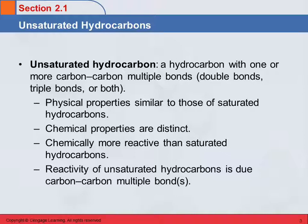We talked in Chapter 1 about alkanes, in which we had hydrocarbons with only single bonds. An unsaturated hydrocarbon is going to have one or more carbon-carbon multiple bonds. These will either be triple or double bonds, or possibly both. These are considered unsaturated. The physical properties are going to be similar to the saturated ones, but the chemical properties are going to be quite different. The unsaturated hydrocarbons are much more reactive, because those multiple bonds are more reactive than single bonds.